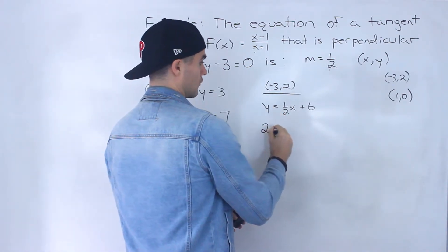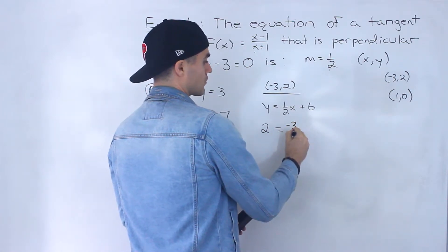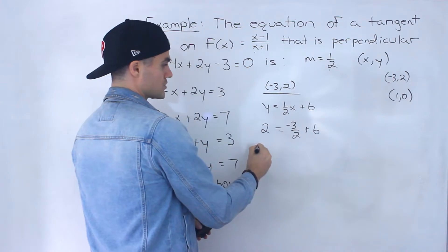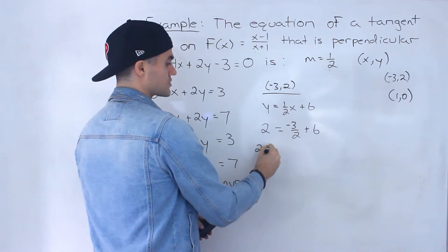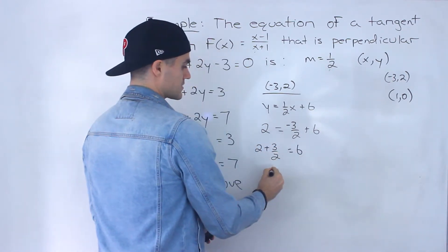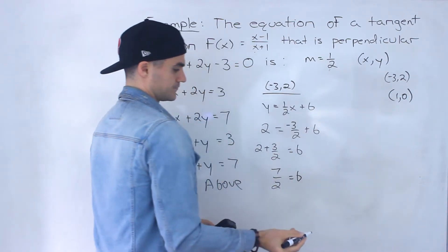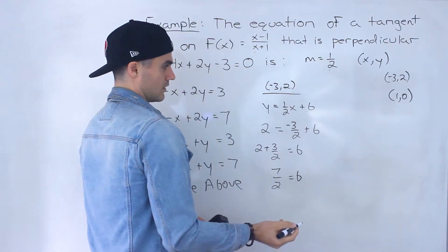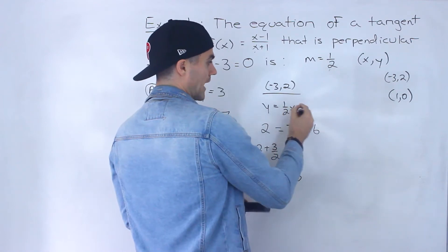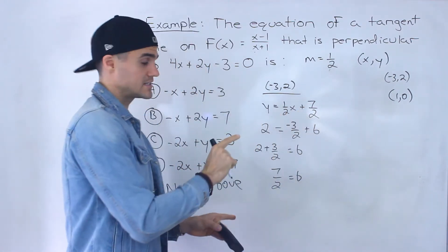Using y equals 1 over 2 x plus b, plug in y equals 2 and x equals negative 3: 2 equals negative 3 over 2 plus b. Bringing it over: b equals 2 plus 3 over 2, which is 7 over 2. So the equation of one tangent is y equals 1 half x plus 7 over 2.